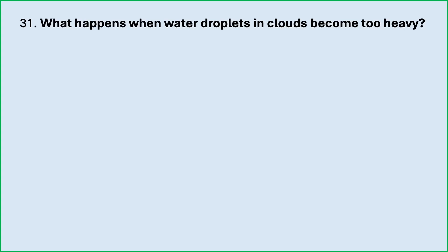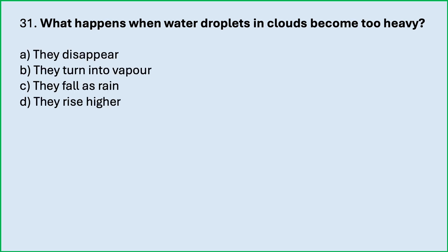What happens when water droplets in clouds become too heavy? They disappear; they turn into vapour; they fall as rain; they rise higher. Which is the correct answer? They fall as rain. The small water droplets float in the air and form clouds. When many droplets join together to form bigger drops of water, some drops get so heavy that they start falling — these falling water drops are what we call rain.